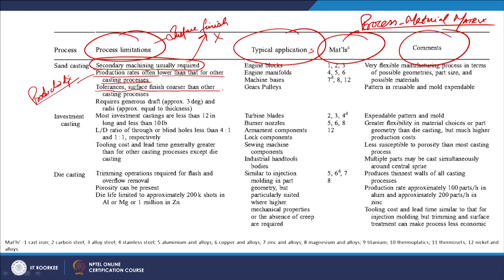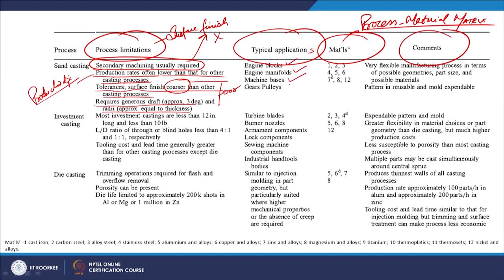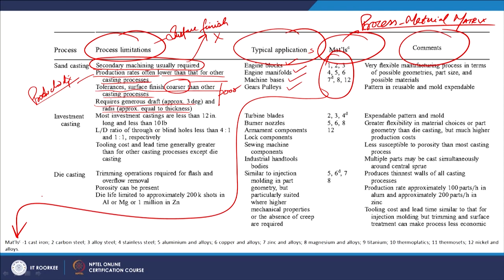If we have this compiled information when we are designing our product, and during that design process wherever we have to specify the manufacturing process, we can just have a look at this summary of manufacturing processes. This summary will definitely be helpful when we propose the manufacturing process for making our product. With this we conclude today's session. In the next session we will discuss specific product design guidelines related to various manufacturing processes — what must be kept in mind when designing a product to be made by sand casting, then die casting, and so on. That will be our objective in the next sessions. Thank you.